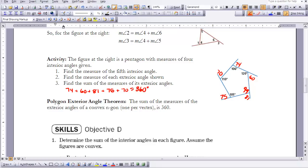That brings us to the polygon exterior angle theorem that says the sum of the measures of the exterior angles of a convex n-gon, one per vertex, is 360. We will work through the examples that I have here in class, so you do not need to do those. This ends Lesson 5-7.